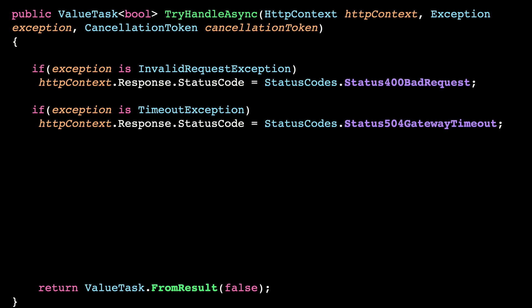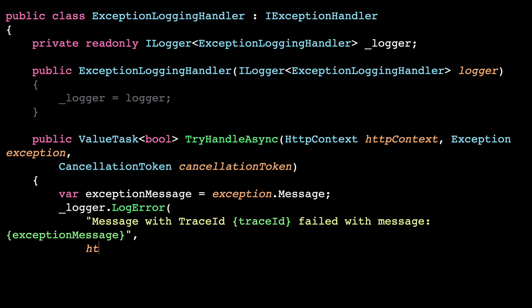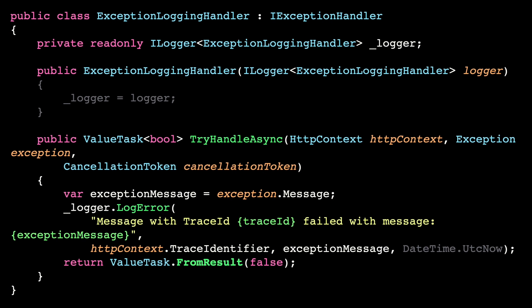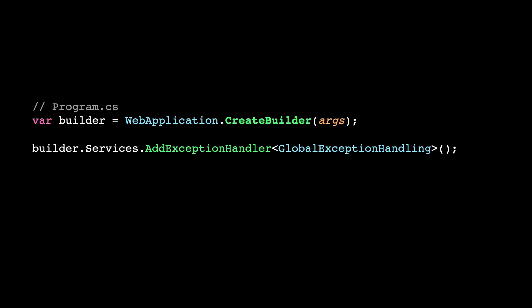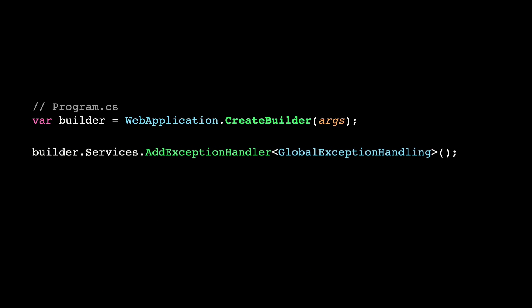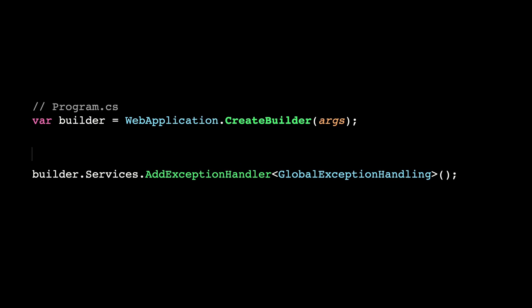Let's move logging out of there. Create a new ExceptionLoggingHandler, implement the same interface, and let's keep it returning false — we don't handle the error here, we are just logging. Now that we have a new handler, let's go back to the program.cs and register one new exception handler right before the global exception handling. Order matters — it's a pipeline. Now when we run this thing, it works perfectly. First it will log all the exceptions, and then go to the next handler in the pipeline. And if it's one of those two types of exceptions, it will convert the status code.